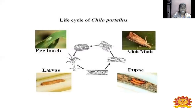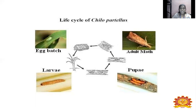Here is a picture of the life cycle of stem borer, Chilo partellus. You can see the clusters of eggs laid as a batch; from there larvae emerge — dirty grayish-white in color with the longitudinal line. Then it becomes a pupa, and the next stage is the adult moth. This is the life cycle of stem borer.